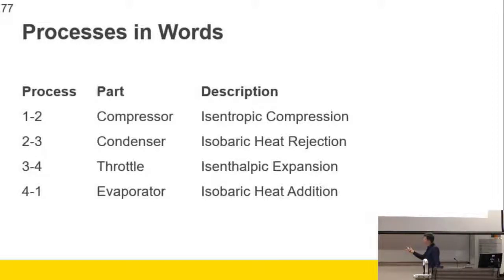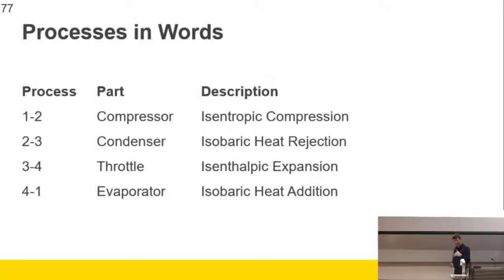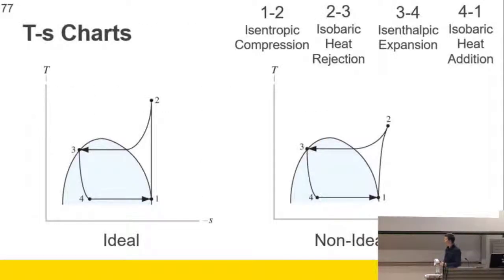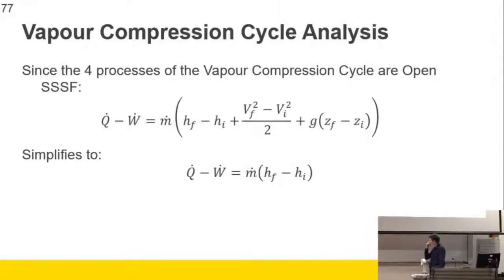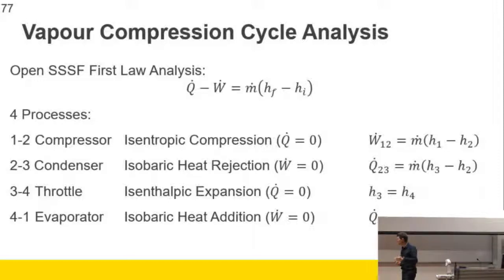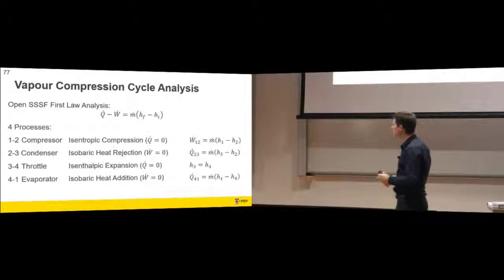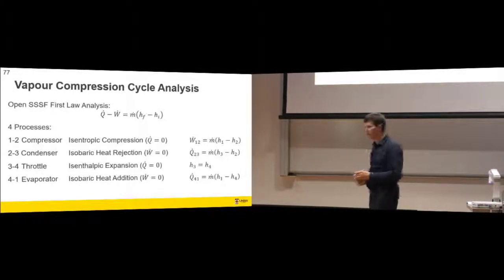Ideally the compressor is isentropic. The condenser is isobaric - no pressure change, heat rejection. The throttle is isenthalpic - no enthalpy change. And the evaporator is isobaric heat addition. For an ideal cycle, because we know that the two states are saturated, we know where state points three and one are. Because it's steady-state steady-flow, our formulas for the four processes simplify. If we assume no heat through the compressor and no work in the condenser and evaporator, we get formulas for work, heat in, heat out, and no enthalpy change across the throttle.